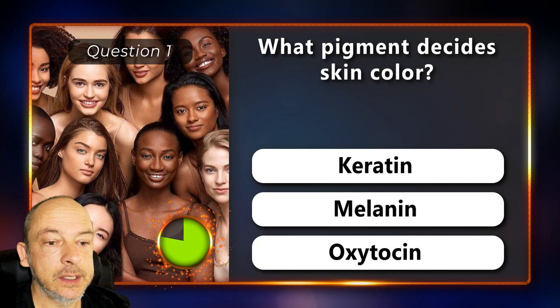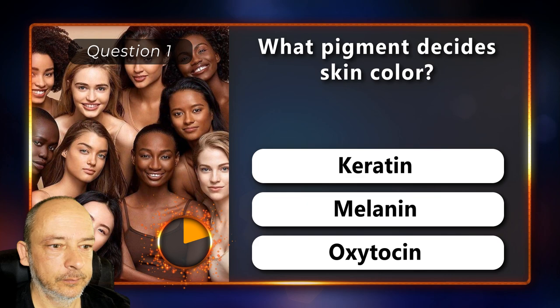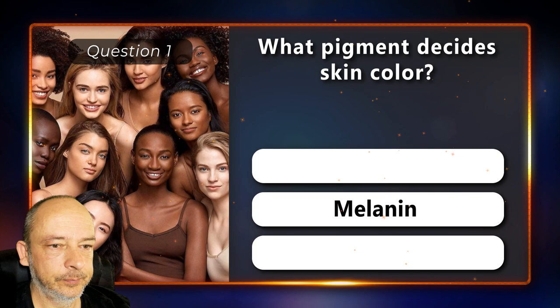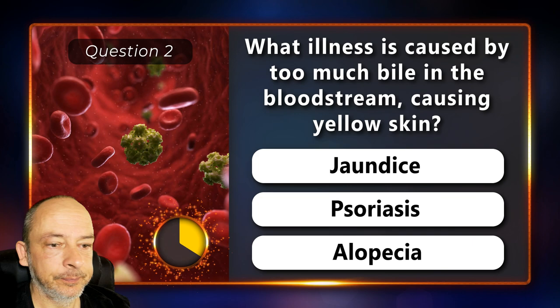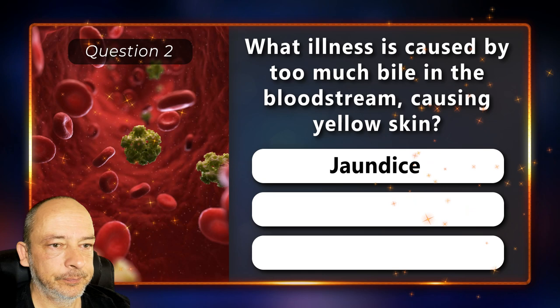Question 1. What pigment decides skin color? Is it keratin, melanin or oxytocin? It's melanin. Question 2: What illness is caused by too much bile in the bloodstream causing yellow skin? Is it jaundice, psoriasis or alopecia? It's jaundice.